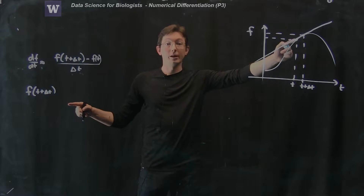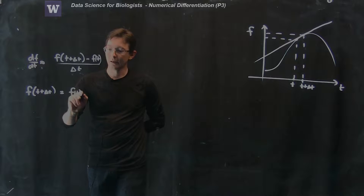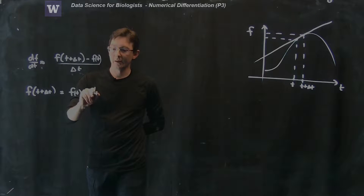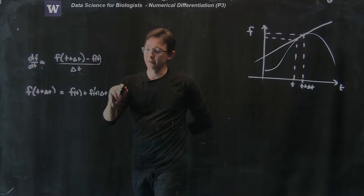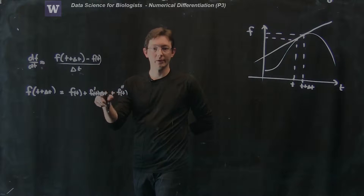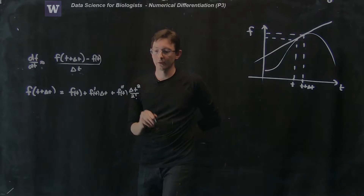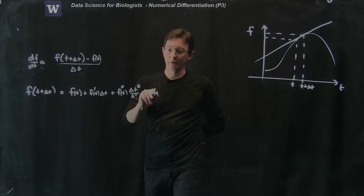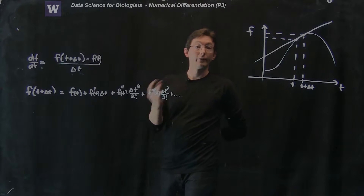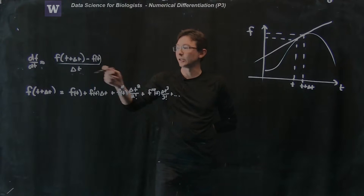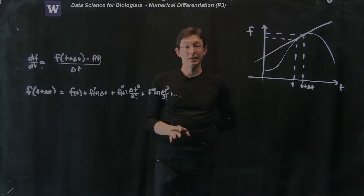We're Taylor expanding f(t + Δt) around our base point t, and this is equal to f(t) plus f′(t) times Δt, plus f″(t) — that's the second derivative — times Δt squared over two factorial, plus f‴(t) times Δt cubed over three factorial, and on and on forever. This is the Taylor series representation of f(t + Δt) in terms of derivatives of the function at time t.